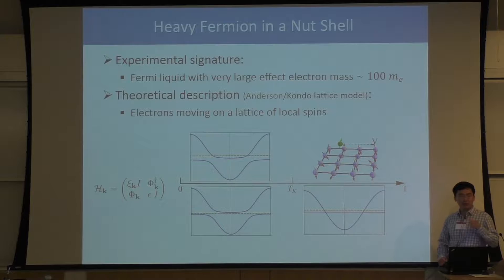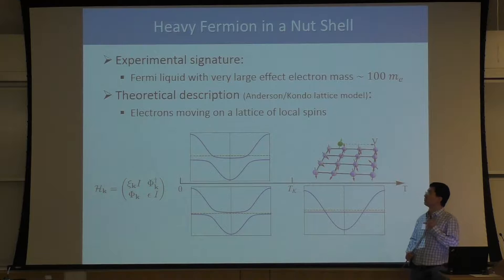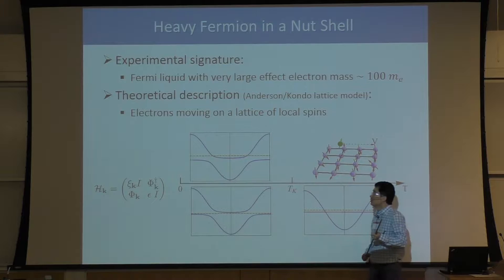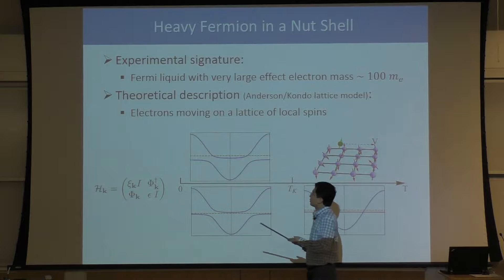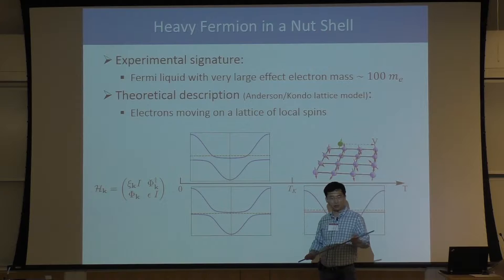Heavy fermion compounds are actually a very large family of strongly correlated materials. There are many different heavy fermion compounds, and they all share the same experimental signature. Although they are strongly correlated, Fermi-liquid theory typically works pretty well in those compounds, as long as we stay far away from quantum critical points.